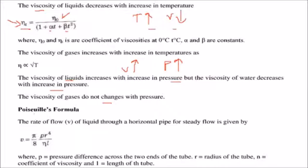Poiseuille's formula: the rate of flow V of liquid through a horizontal pipe for steady flow is given by pi by 8. P is the pressure difference across the two ends of the tube.